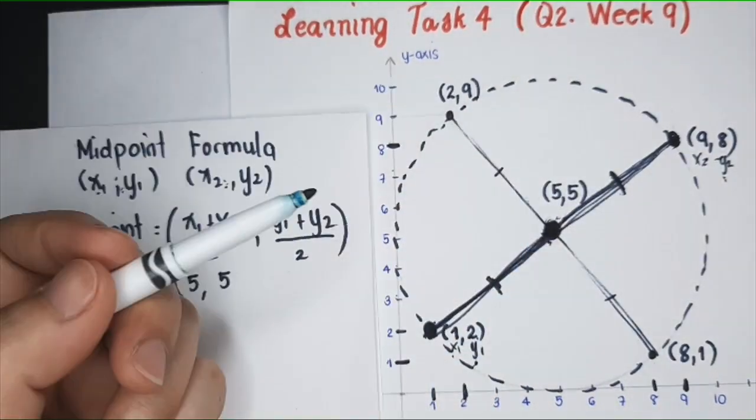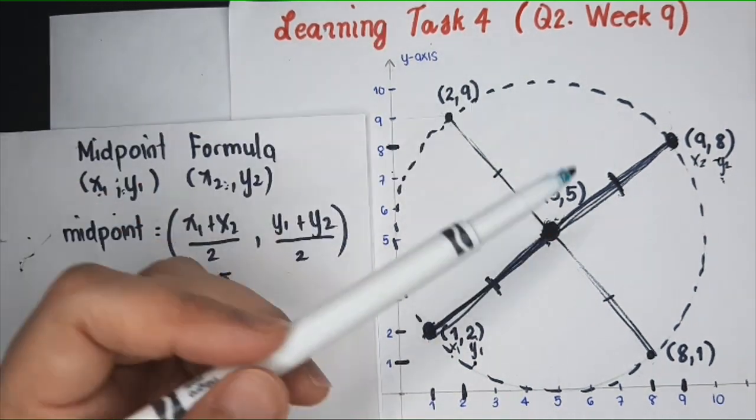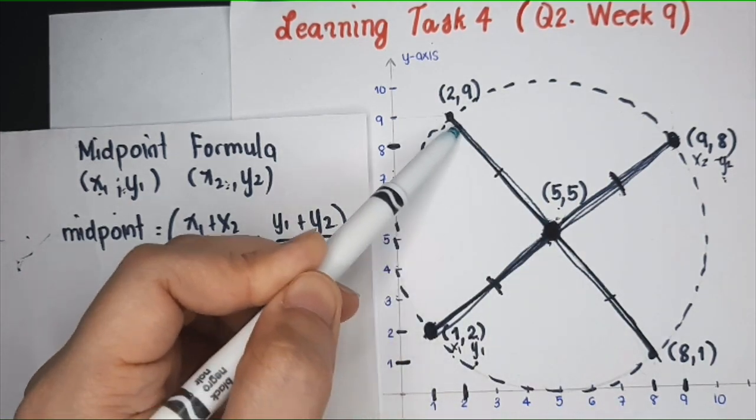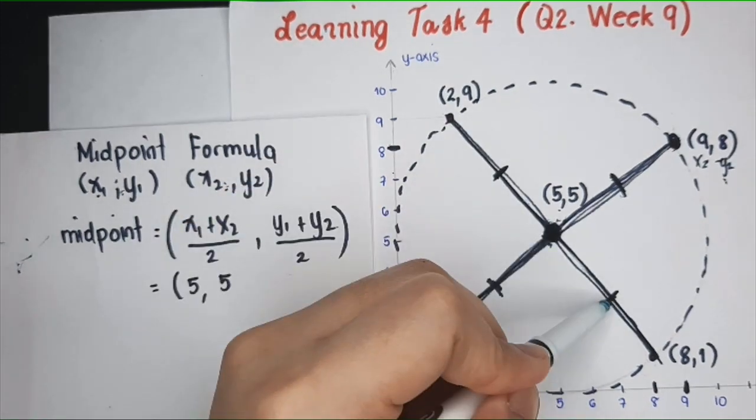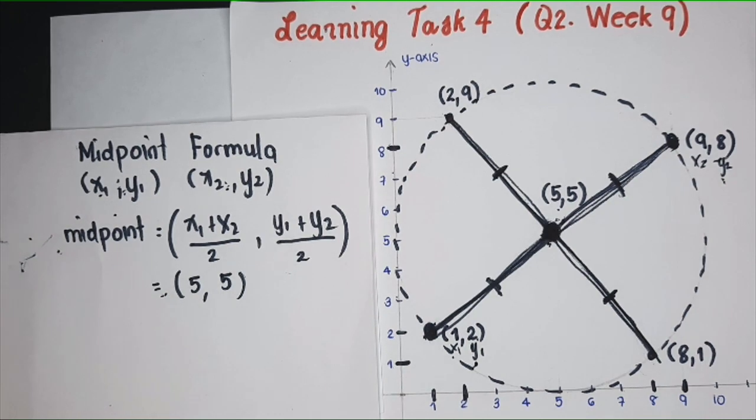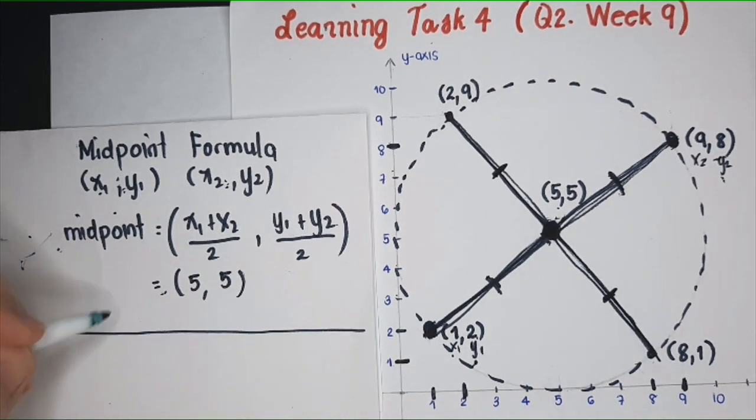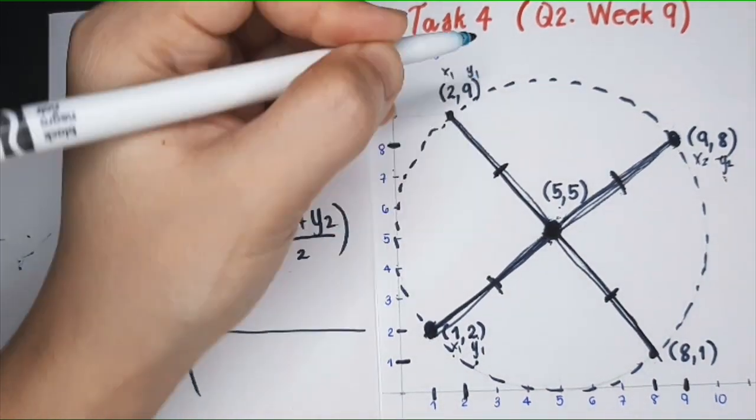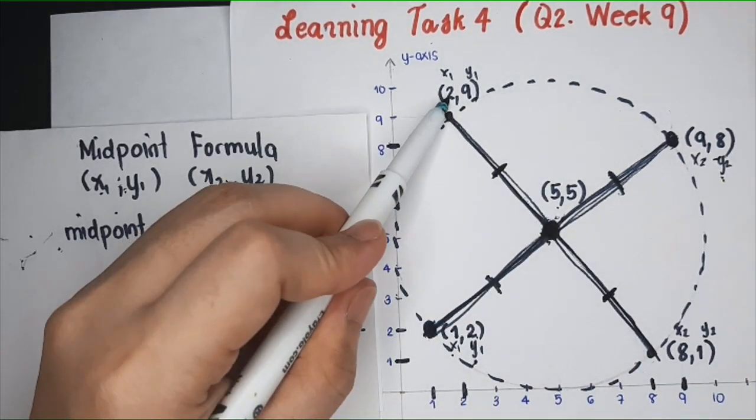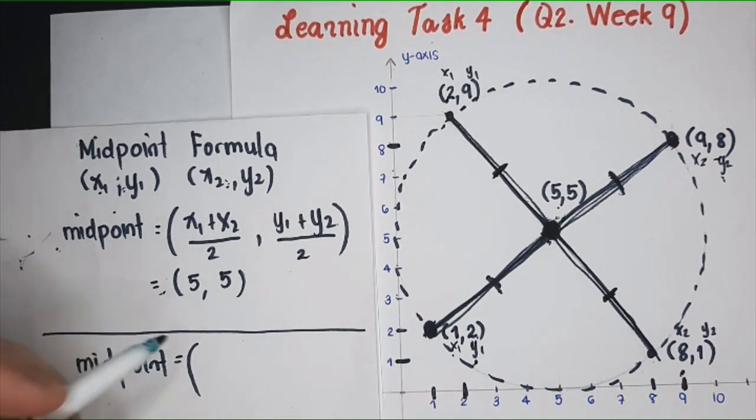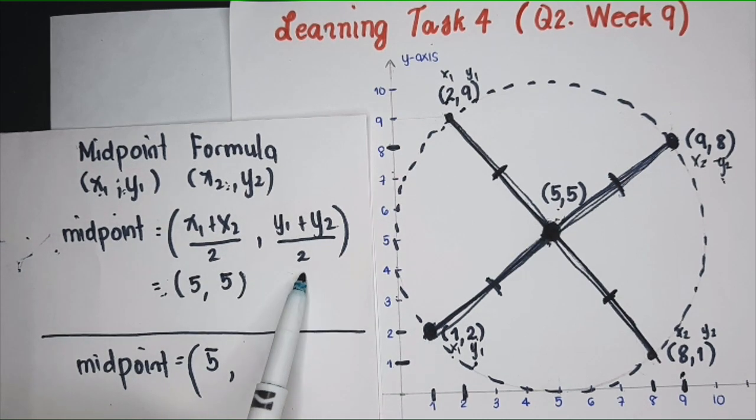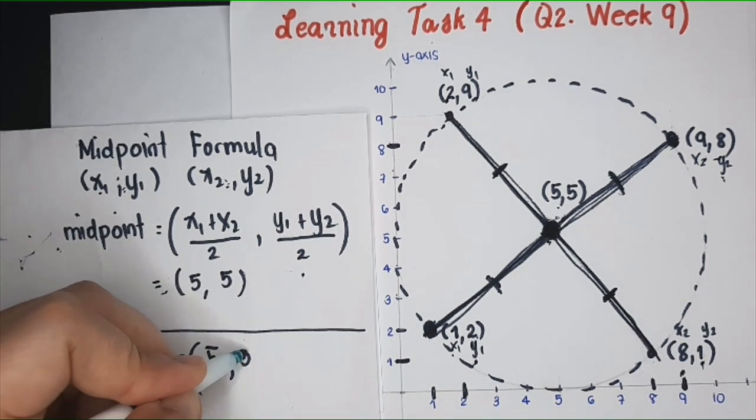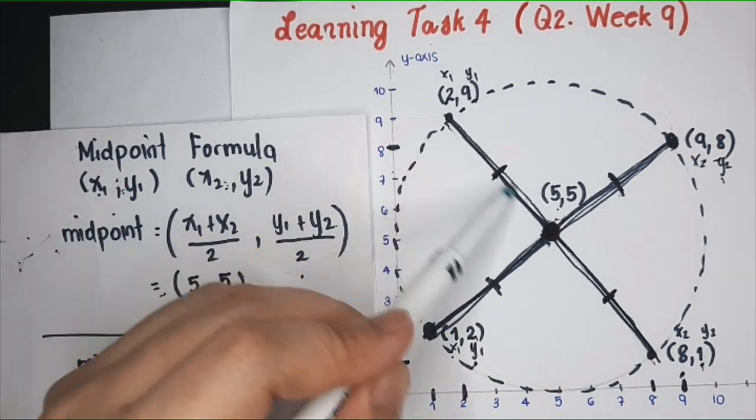These distances are equal because this is the middle point. Now, to check if it's really (5,5), you can also find the middle point of this line segment. Look, these distances are also equal. Using again the midpoint formula: you have 2 plus 8 equals 10, divided by 2, you get 5 for the x-coordinate. For the y-coordinate: 9 plus 1 equals 10, divided by 2, you get 5. Fortunately, this is also the midpoint of this line segment.